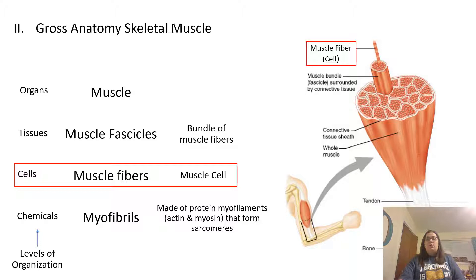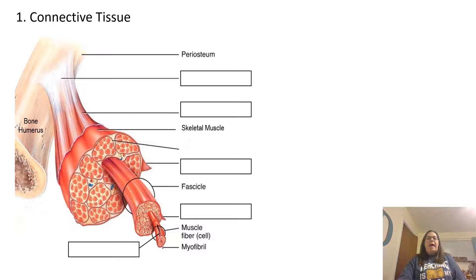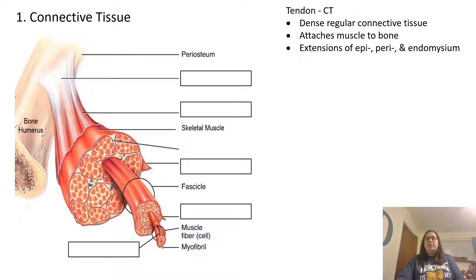You have your muscle fiber, which is the cell. A bundle of these cells is a fascicle, and many fascicles together make the whole muscle. When we look at the muscle as a whole organ, there's connective tissue present. Tendons are dense regular connective tissue that attach muscle to bone, and they are extensions of the epimysium, perimysium, and endomysium. So there's an extension connecting the muscle to the bone.